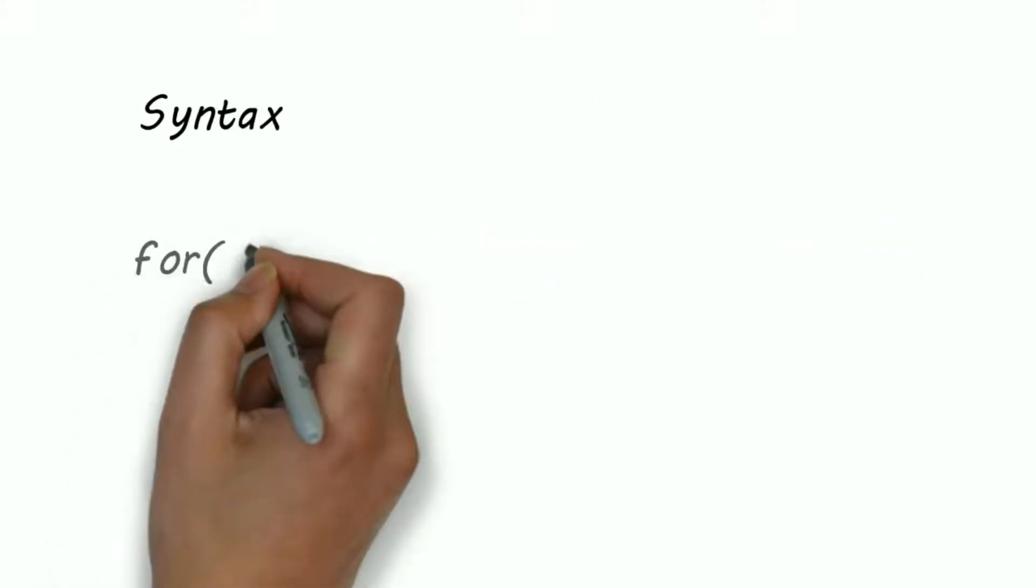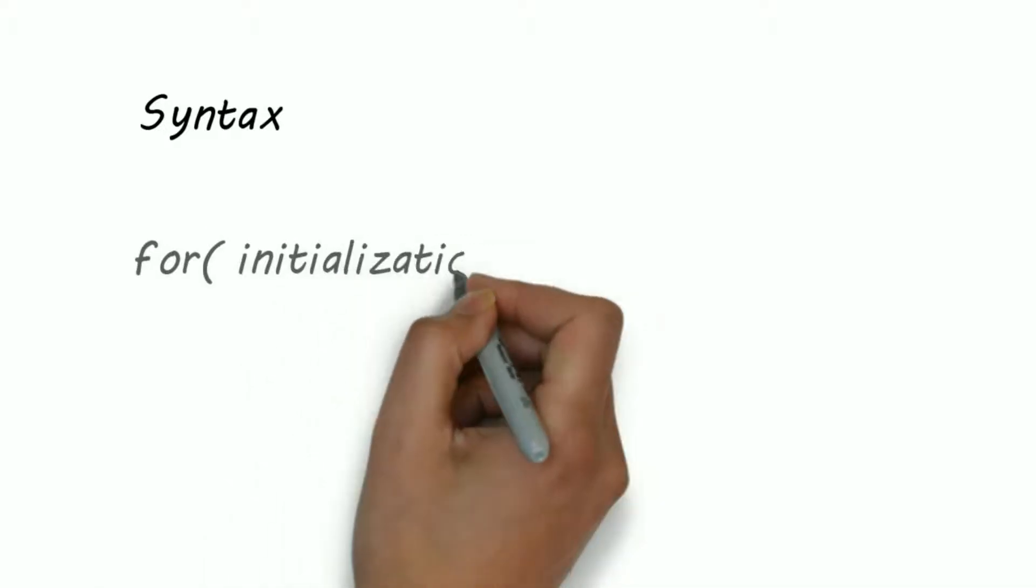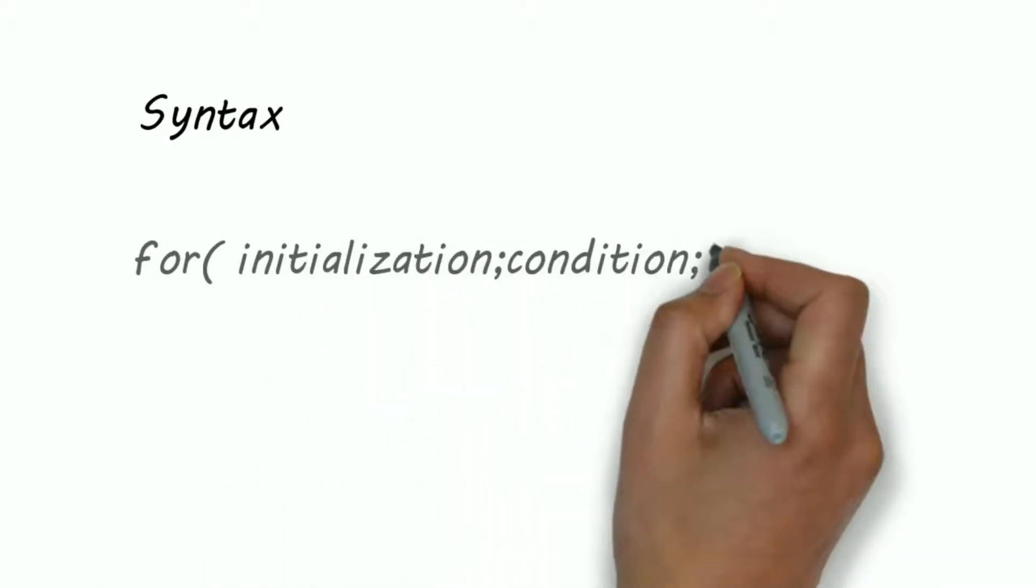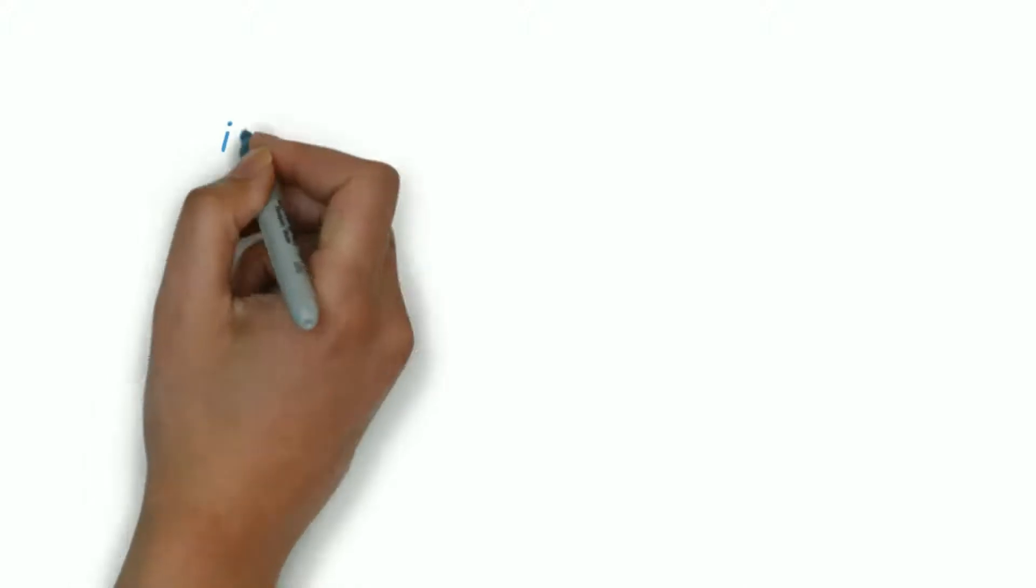Hi guys, a for loop is used to execute a block of code a number of times. The syntax of a for loop is pretty simple: just write the keyword for, the initialization, condition, and increment or decrement. Let's understand this by a simple example.